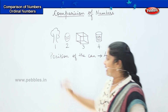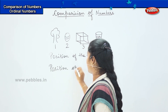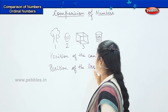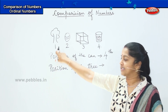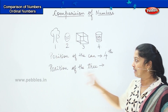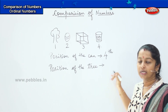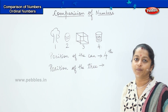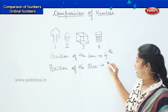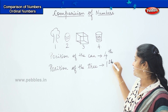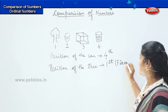Can you tell me the position of the tree in the given picture? See the picture and tell me where is the tree located? Good — it is in the first place. Can I say the position of the tree is 'one'? No, because if I say 'one,' it tells me the number of trees, not the position. So I will write 1st — that is, one, s, t — which is nothing but 'first.'